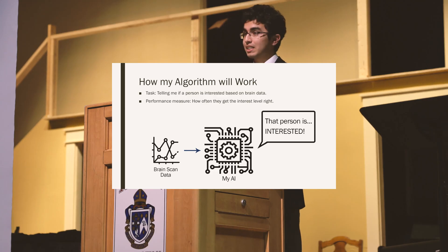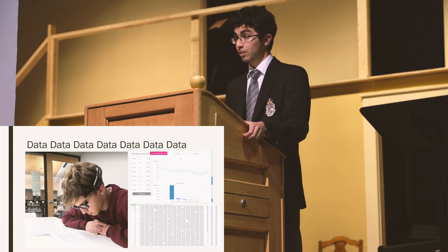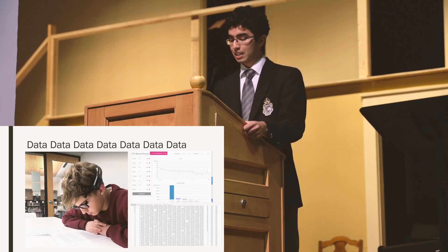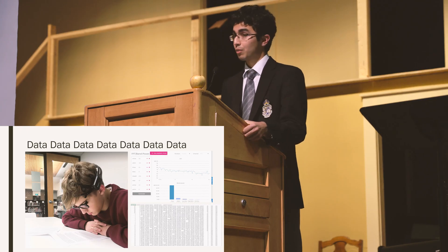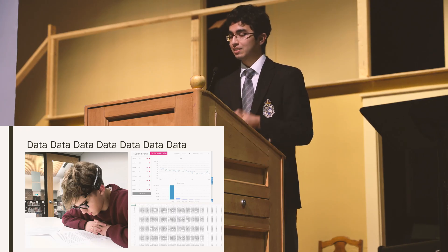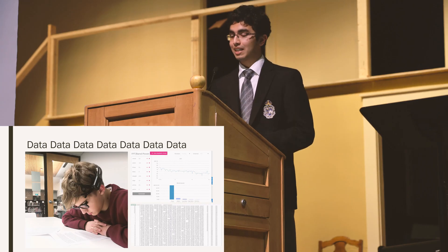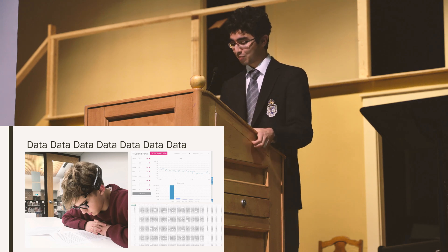I needed all of this data to train my machine learning algorithm, and that is what I did with my 10 peers - I recorded them while they read three articles each. That's how I got my data. I have started to train it, and just last night I was able to get it up to a 78% accuracy level, so it can tell 78% of the time if someone is interested or not.